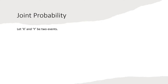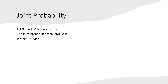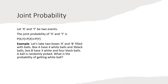First we will look at joint probability. Say x and y are two events. The joint probability of having both events is represented as P(x,y). The probability of having x and y is equal to the probability of x multiplied by the probability of y. Let's go through an example to understand what this means.